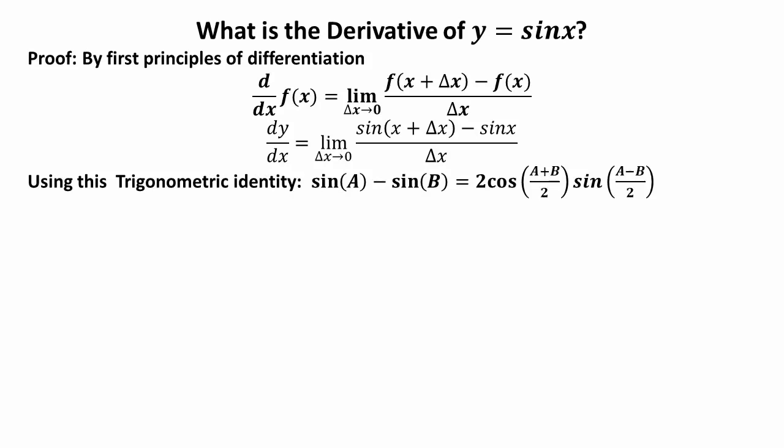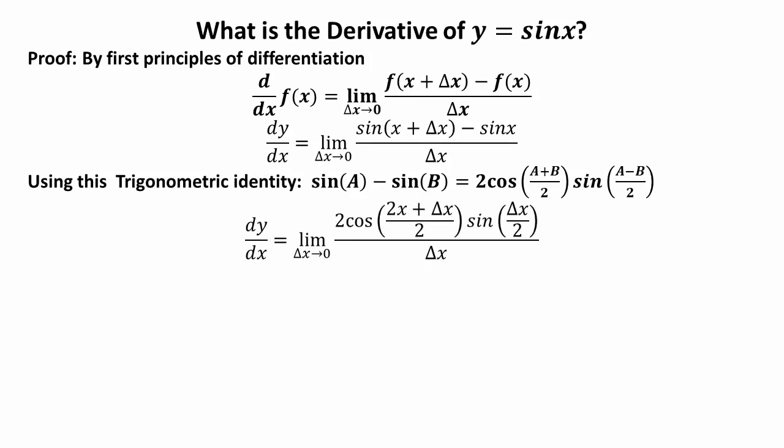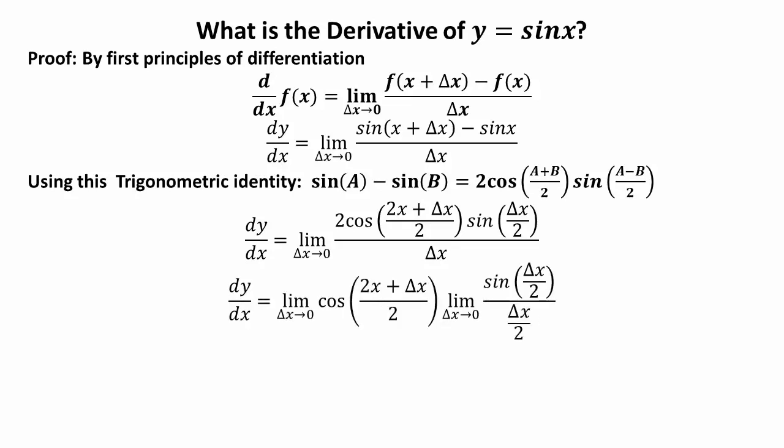Taking A = x + Δx and B = x, and substituting the values of A and B into this trigonometric identity, we get dy/dx = limit as Δx tends to 0 of 2cos[(2x + Δx)/2] · sin(Δx/2) over Δx. Simplifying: dy/dx = limit as Δx→0 of cos[(2x + Δx)/2] · limit as Δx→0 of sin(Δx/2) over (Δx/2).